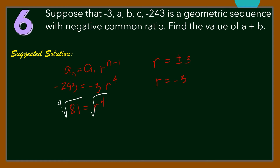The sequence is: negative 3 times negative 3 equals 9, so A equals 9. Then 9 times negative 3 equals negative 27, so B equals negative 27. Then negative 27 times negative 3 equals 81, so C equals 81. And 81 times negative 3 equals negative 243, confirming the last term. Since we are looking for A plus B, that is 9 plus negative 27, which equals negative 18.